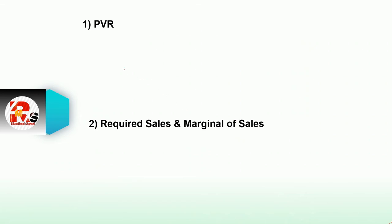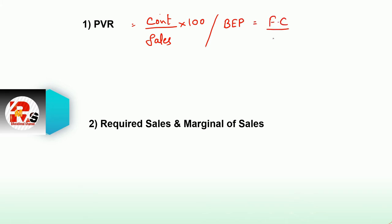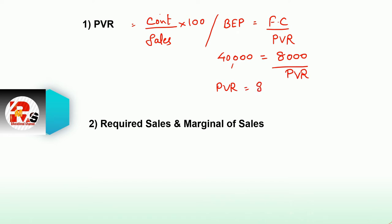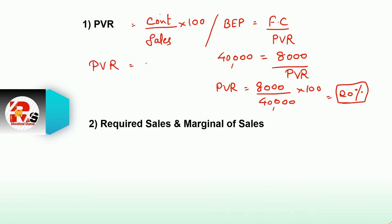Now how to calculate PVR? PVR is contribution divided by sales multiplied by 100, but we don't have contribution or sales directly. So we use the BEP formula: BEP equals fixed cost divided by PVR. Break-even sales is 40,000, fixed cost is 8,000, so 40,000 equals 8,000 divided by PVR. Therefore PVR equals 8,000 divided by 40,000 into 100, which comes to 20%.